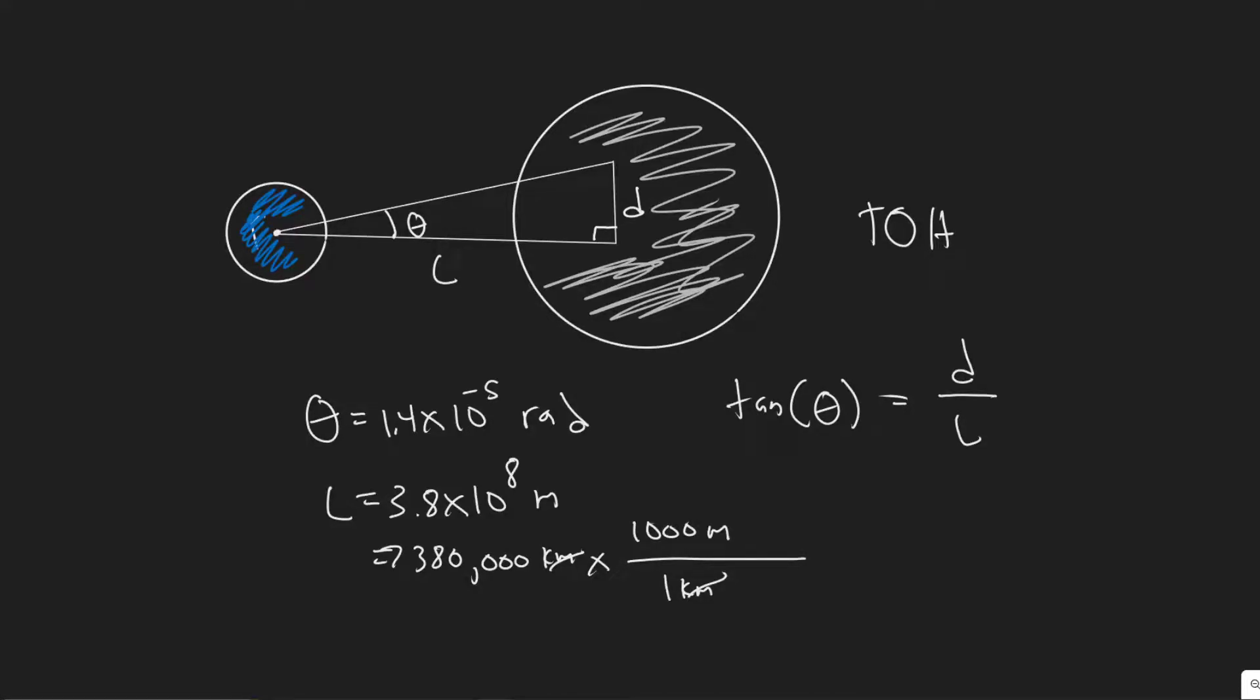In this problem we're told a laser beam is directed at the moon 380,000 kilometers from earth. The beam diverges at an angle theta of 1.4 times 10 to the minus 5 radians. What diameter spot will it make on the moon?